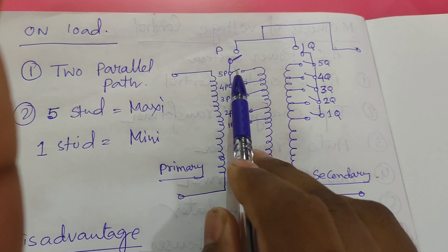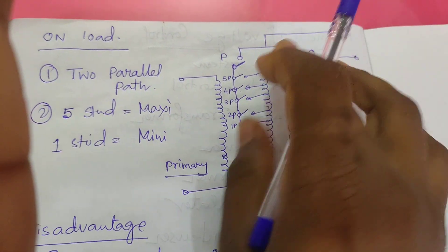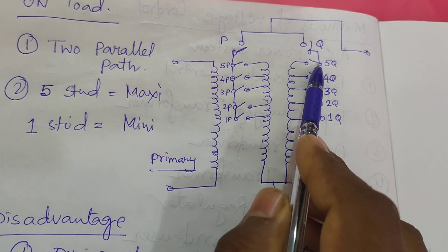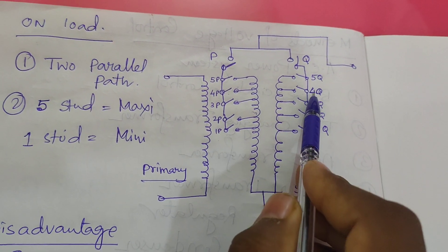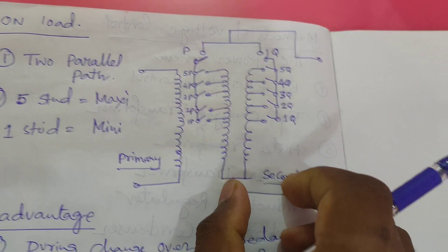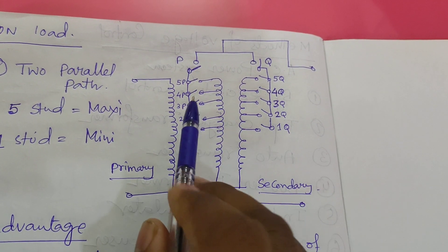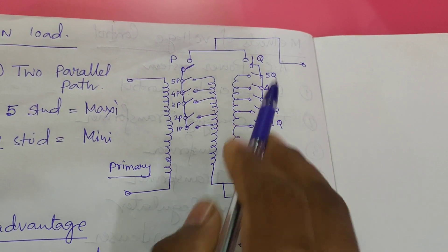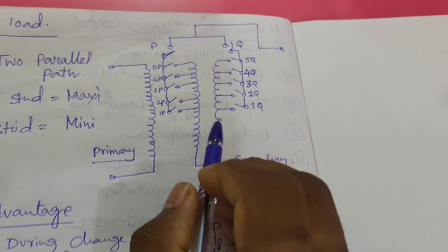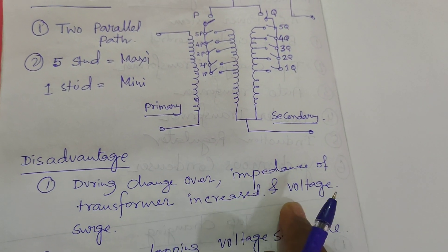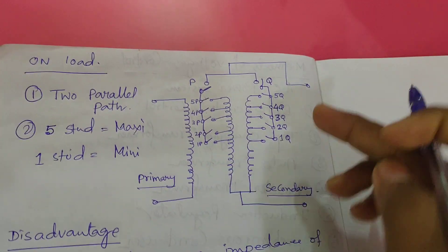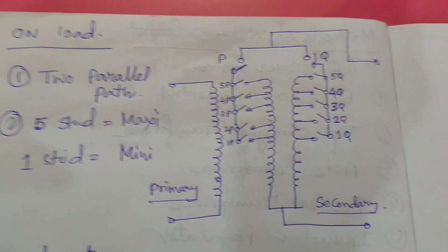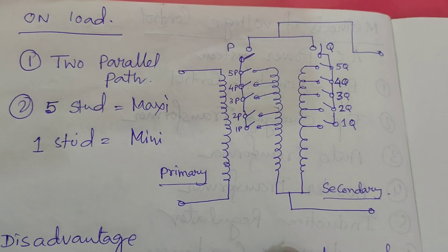After changing 5P to 4P, we reconnect P so both parallel paths are active again. Then we open Q and change the Q arm from 5Q to 4Q in the same manner. During this changeover procedure, the impedance of the transformer increases because the movable arm has resistance, which is factored in during current loading. As a result, a voltage surge or voltage dip occurs during the tap changing, which can trip sensitive relays installed in the system.